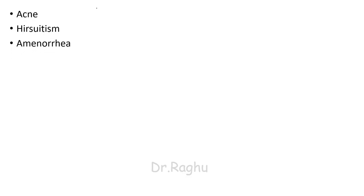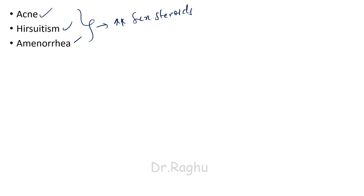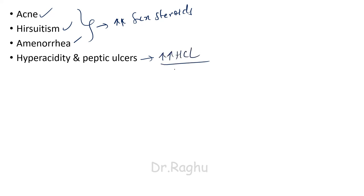These patients can also have acne, hirsutism, and amenorrhea, which are attributable to excessive production of sex steroids. When ACTH levels are elevated, the adrenal cortex is stimulated, producing not only excess cortisol but also excessive mineralocorticoids and sex steroids. Excessive sex steroids result in acne, hirsutism, and amenorrhea. There can also be hyperacidity and peptic ulcers because cortisol stimulates the production of hydrochloric acid from the stomach.